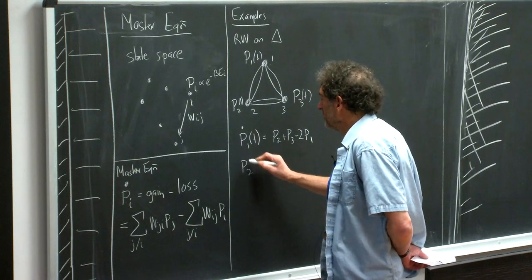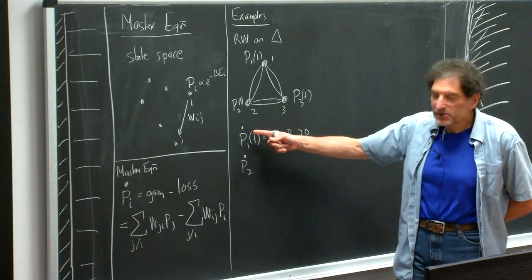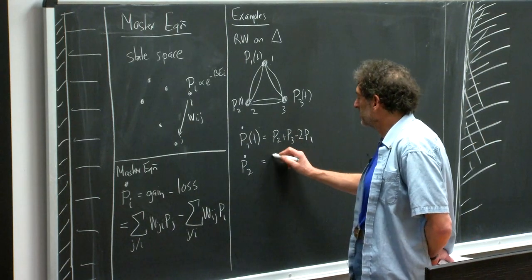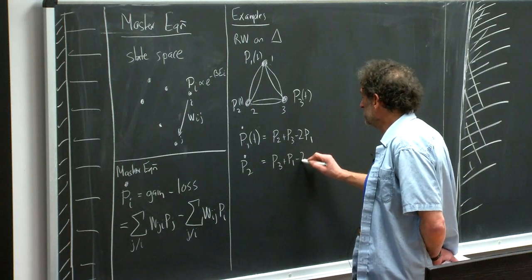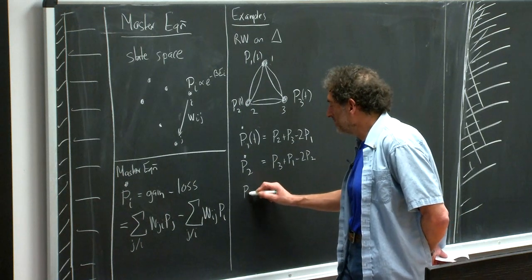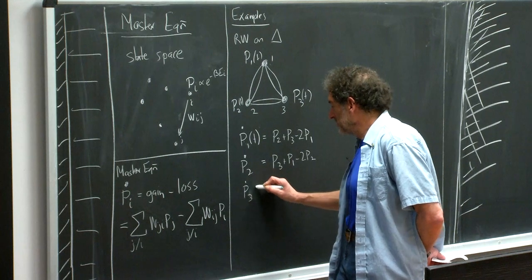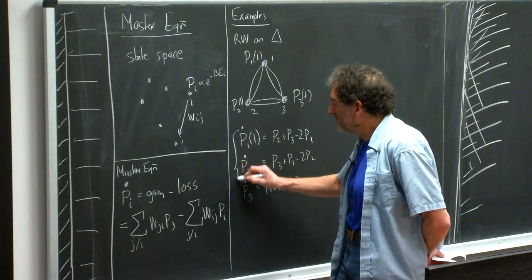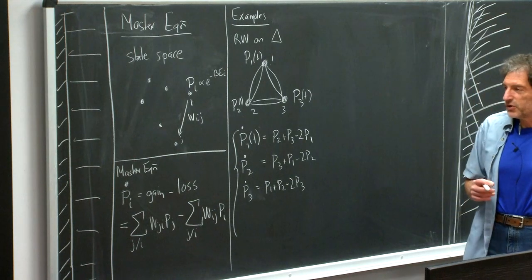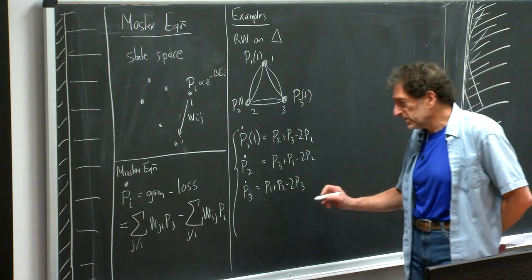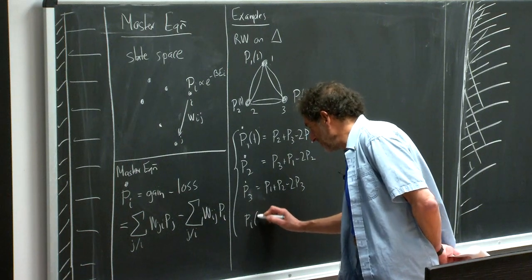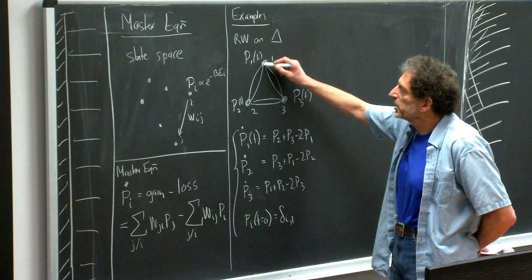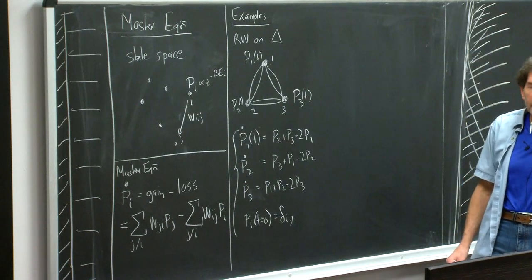We have to supplement these equations with an initial condition. Let me choose P_I at T equals 0 equal to delta_{I1} — that is, I start with a particle at site 1. I want to ask how the probability distribution evolves as a function of time. We have three coupled linear differential equations. We know first order differential equations have exponential solutions — you could assume an exponential and work it all out. But a much more elegant way of solving the same problem is the Laplace transform method.